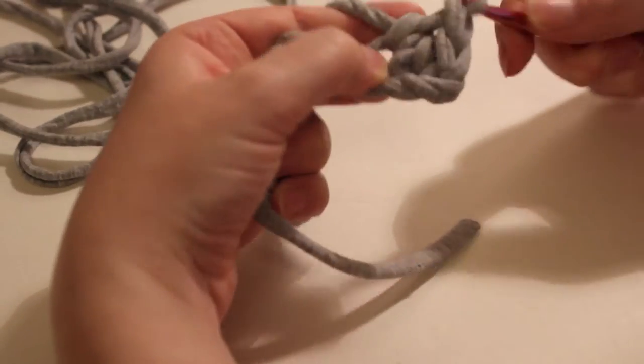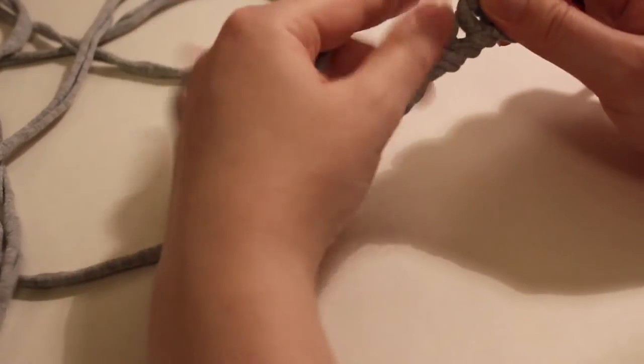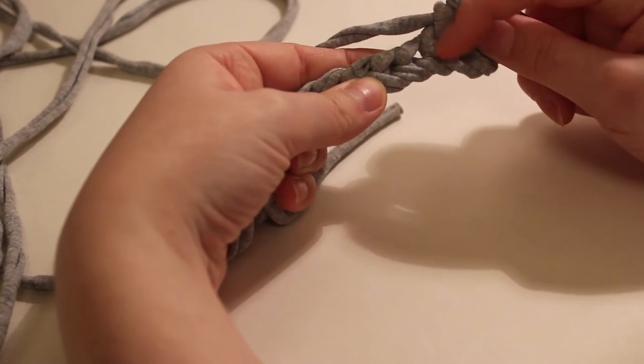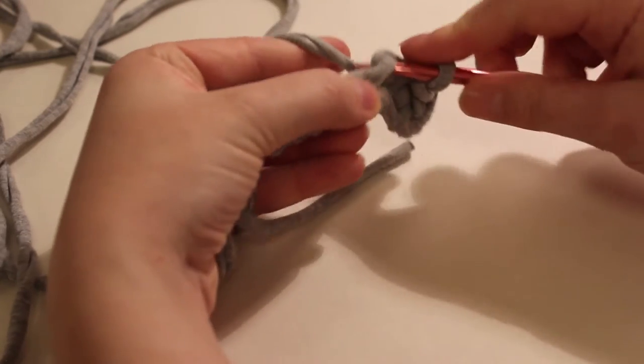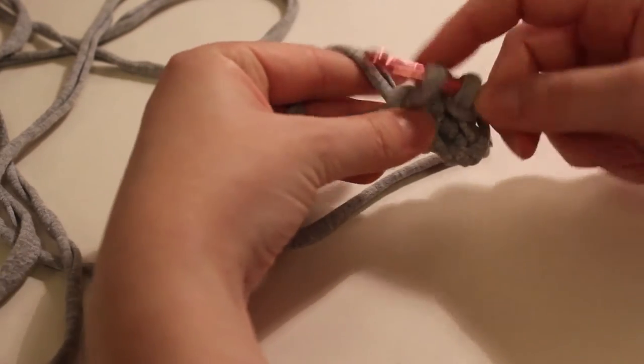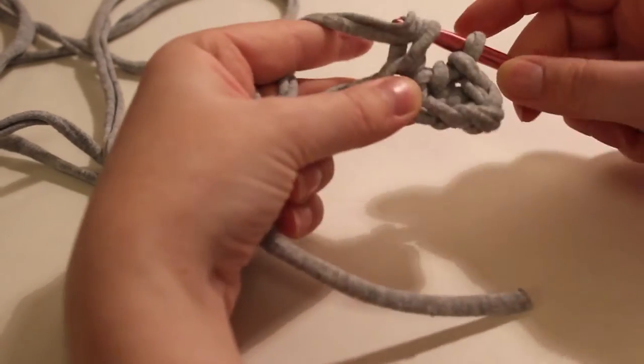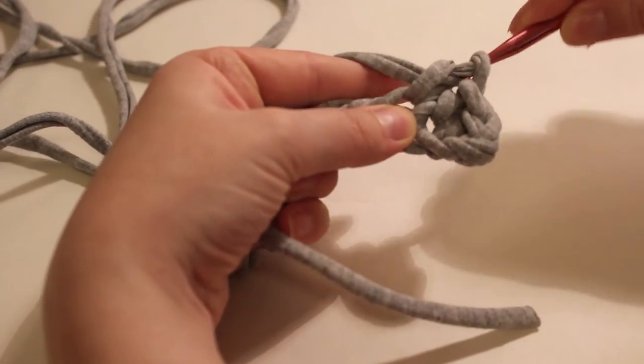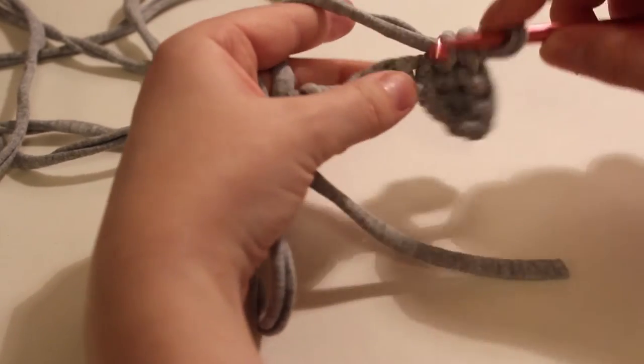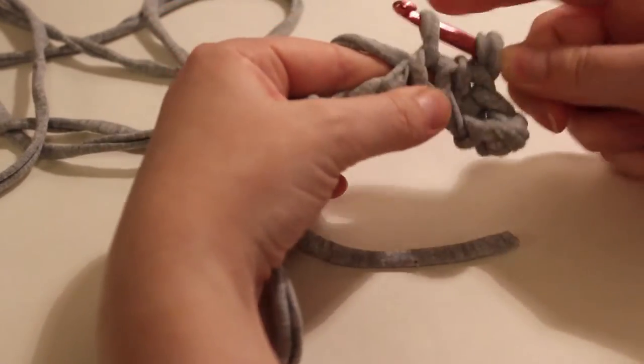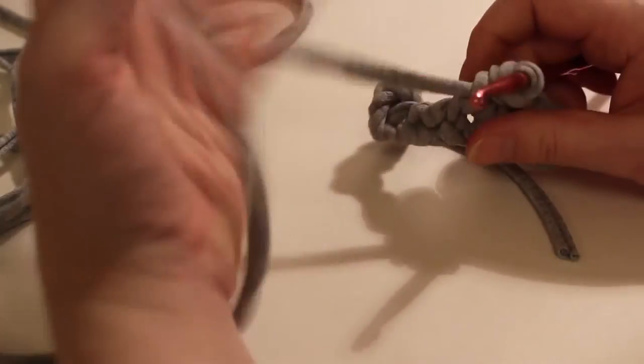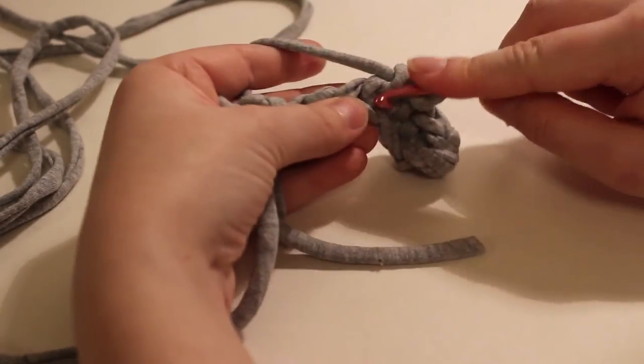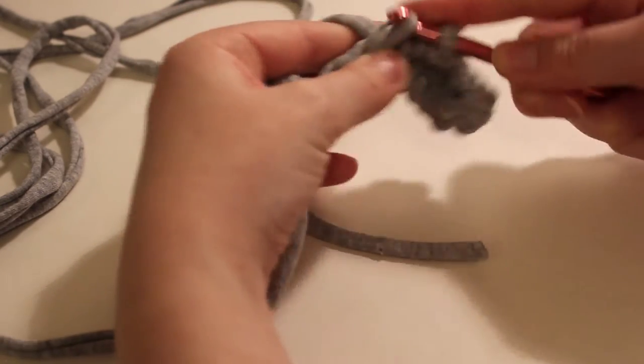And you're just going to continue doing one single crochet in each of your chain stitches all the way down. So every time you see a little V or a little piece of yarn here with a hole underneath, you just need to go in, yarn over, pull up a loop, yarn over, and go through two. It's really difficult in this giant yarn—I'm not very used to working in this big yarn—so just work down the chain here.